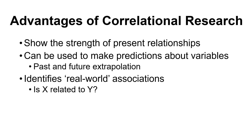Correlational research can also identify real-world associations. If two variables are related, that gives us the idea to follow up with an experiment to determine the nature of that relationship — is it X causing Y or Y causing X? For a large data set, you can run many correlations, filter out unrelated variables, and focus future research on those that are related. Correlational research can be a starting point for further experimentation, or it can stand alone depending on your research goals.